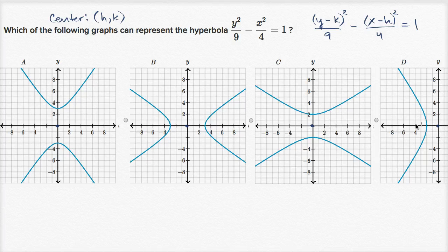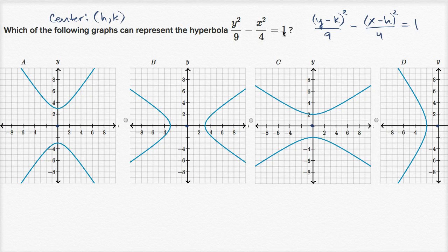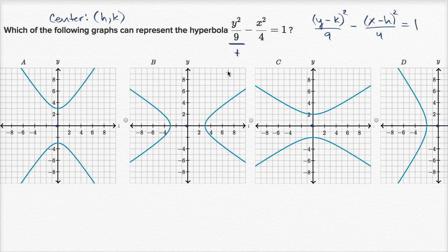The next question is: will this hyperbola open up and down, or left and right? In standard form — (y minus k) squared over something minus (x minus h) squared over something equals one — you just look at whichever term is positive. That tells you which direction the hyperbola opens. Since the y term here is positive, this hyperbola opens up and down.